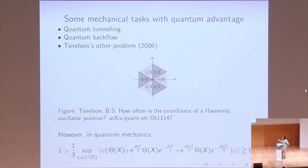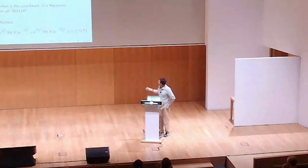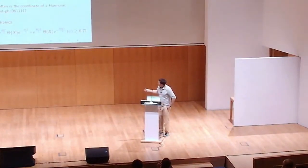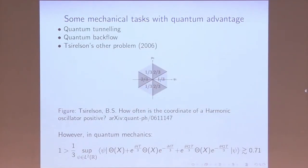However, in quantum mechanics, this probability is given by the average value of this operator. This is the step function, so it's one when x is positive and zero otherwise. And here is just the evolution under the Hamiltonian. Again, t is the period of the particle. And because these three operators do not commute, you cannot just take the spectrum to be like the sum of the spectrum or whatever.